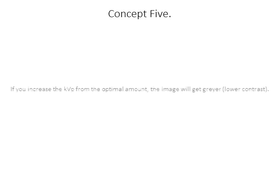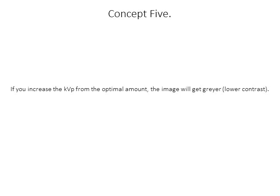The fifth concept: if we increase the KVP, the image is going to get grayer, because a beam that punches through all tissues equally produces a very gray image.